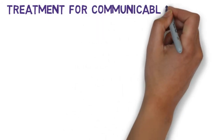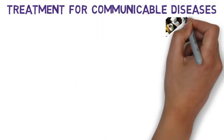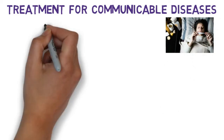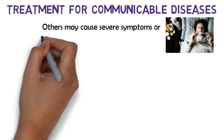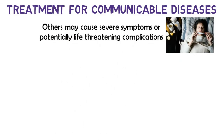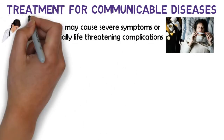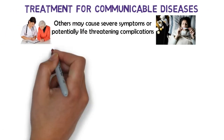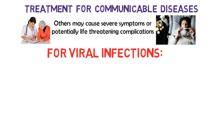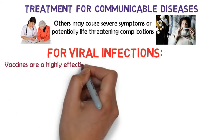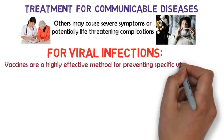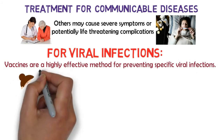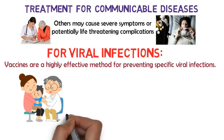Some communicable diseases cause only mild symptoms that disappear without treatment; others cause severe symptoms or potentially life-threatening complications. Consequently, patients require different treatments depending on disease process and clinical presentation. For viral infections, vaccines are a highly effective method for preventing specific viral infections. There are several different types of vaccines.